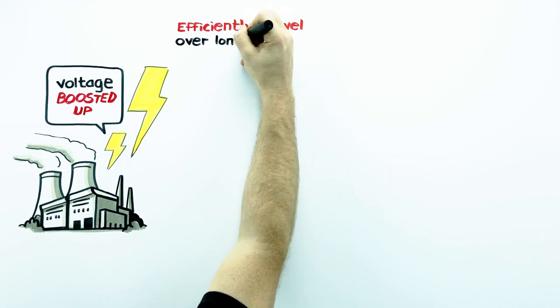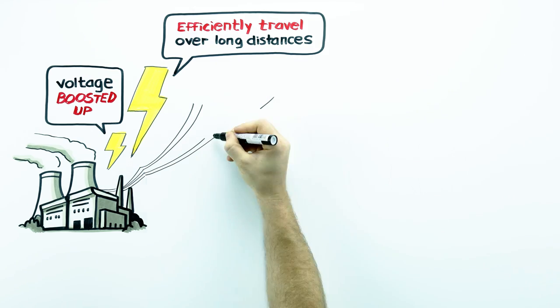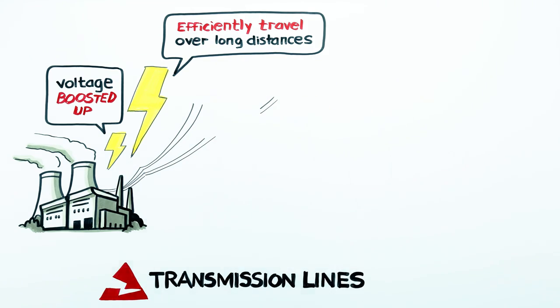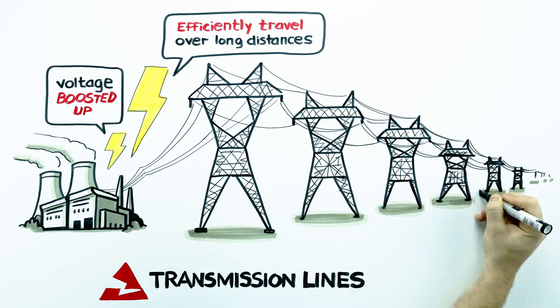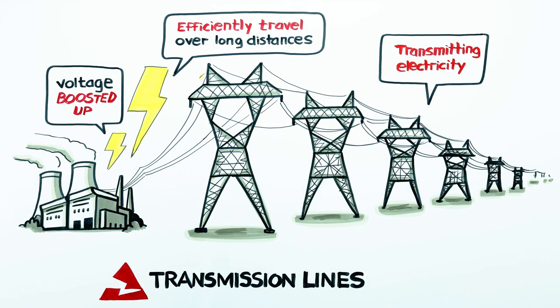The voltage created at these plants must be boosted up so that it can efficiently travel over long distances wherever the energy is needed. Large towers are then used to carry this high voltage power all across the state, transmitting electricity closer to where our homes and businesses are located.